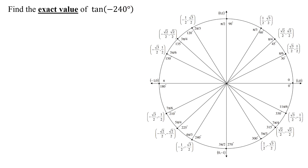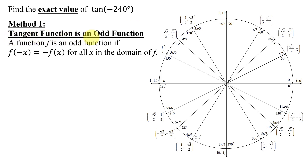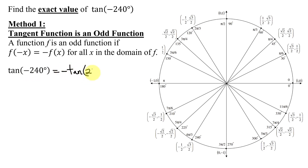The first method uses the fact that the tangent function is an odd function. A function f is an odd function if f of negative x equals negative f of x for all x in the domain of f. So the tangent of negative 240 degrees is equal to the negative tangent of positive 240 degrees by this definition of odd functions.